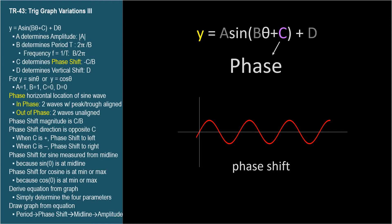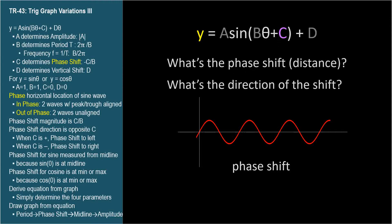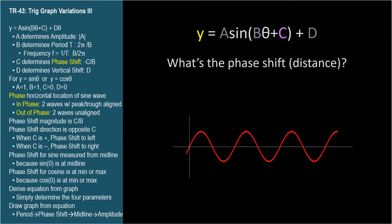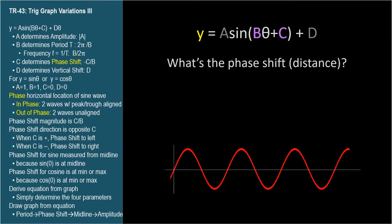There are two questions to answer: what's the phase shift distance, or size, and what's the direction of the shift? The size of the shift is c over b.